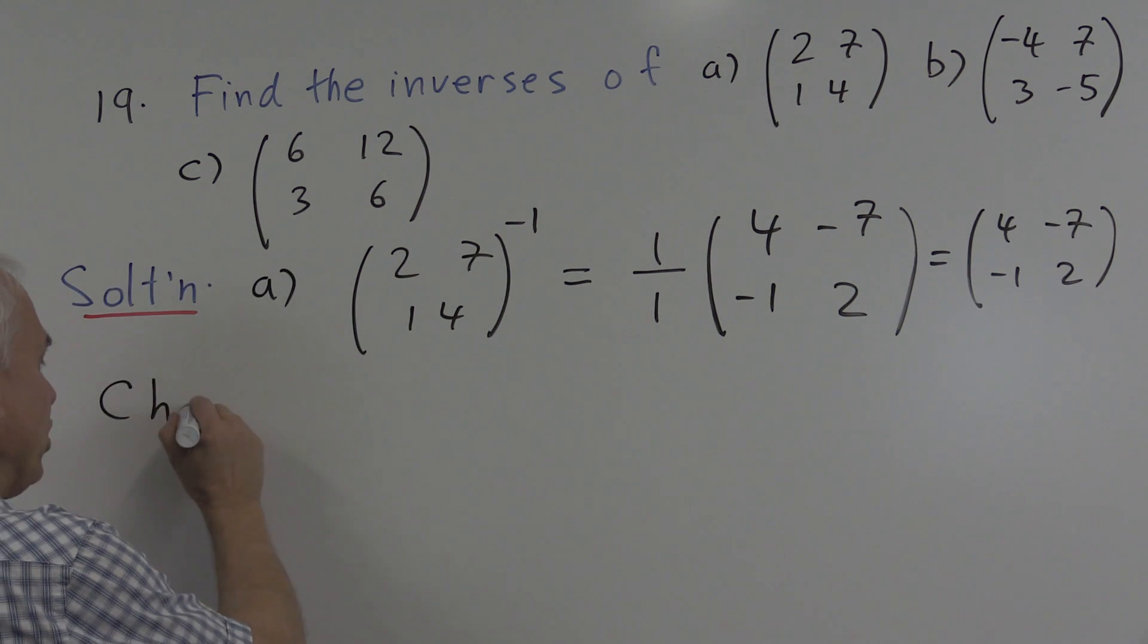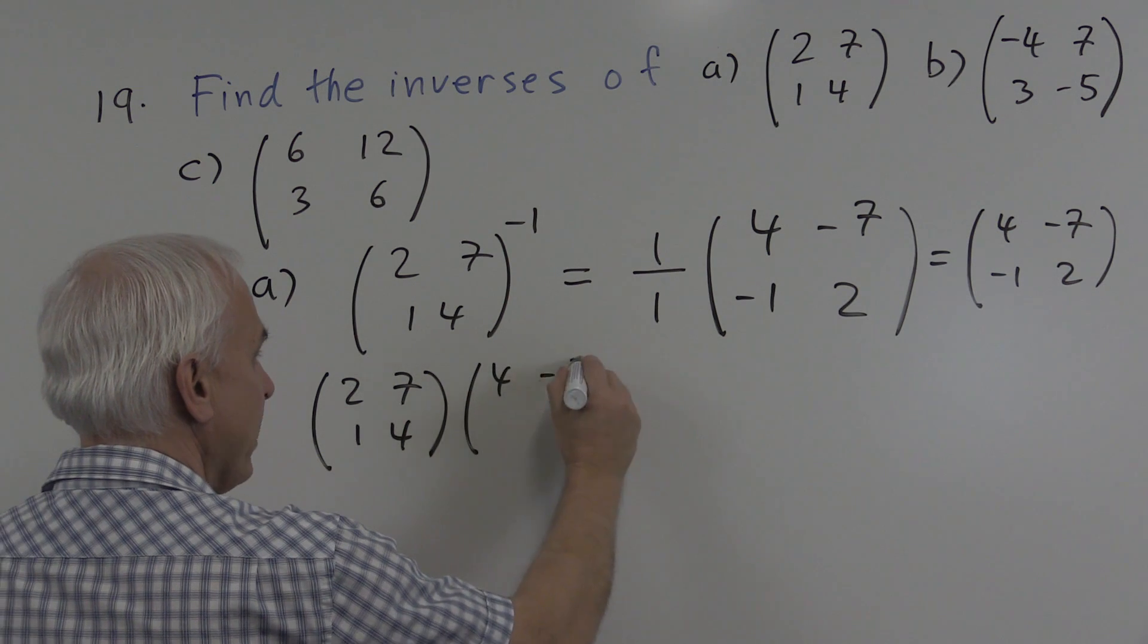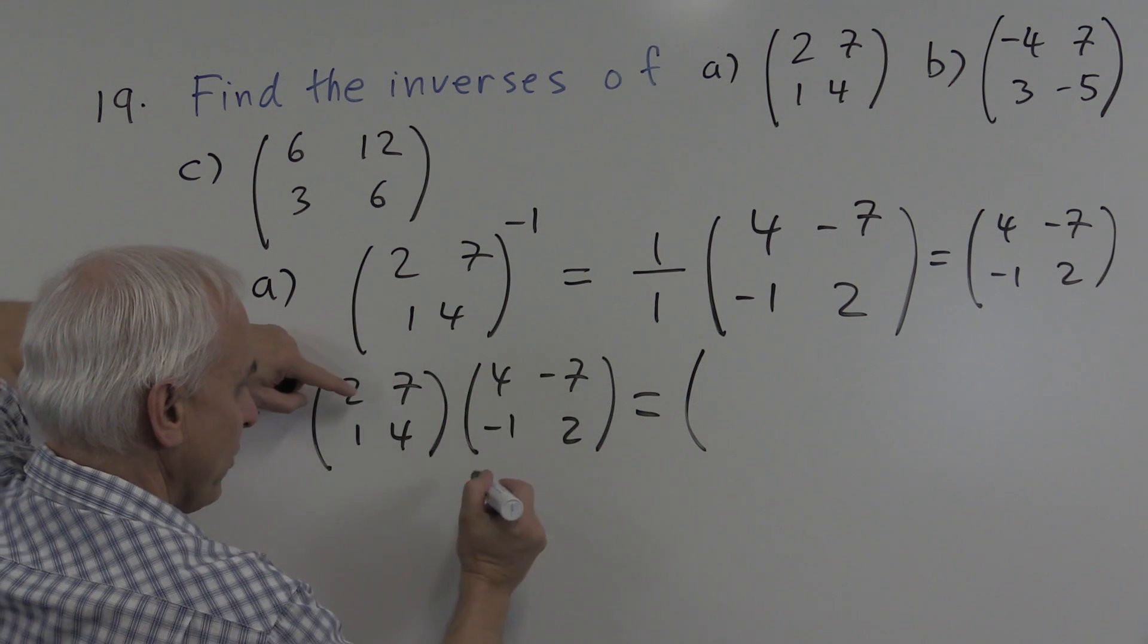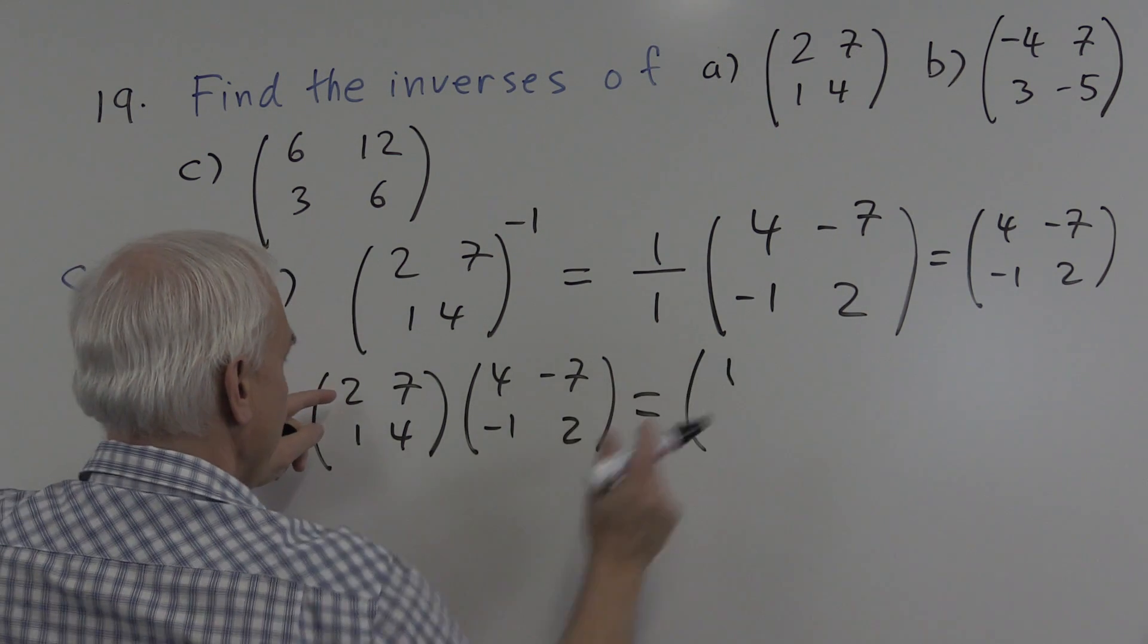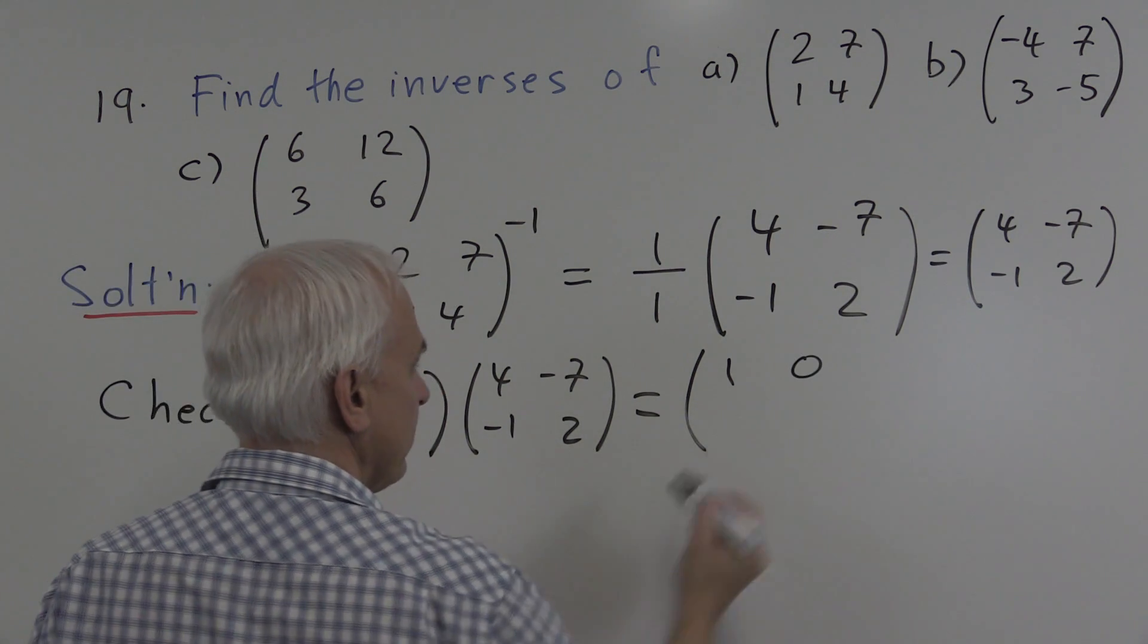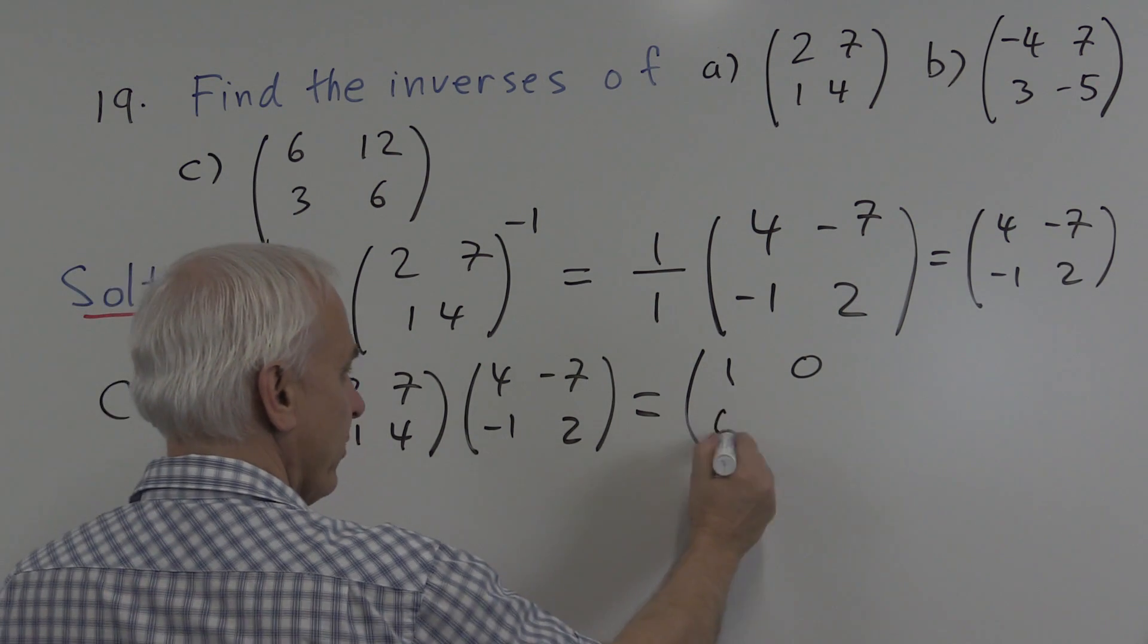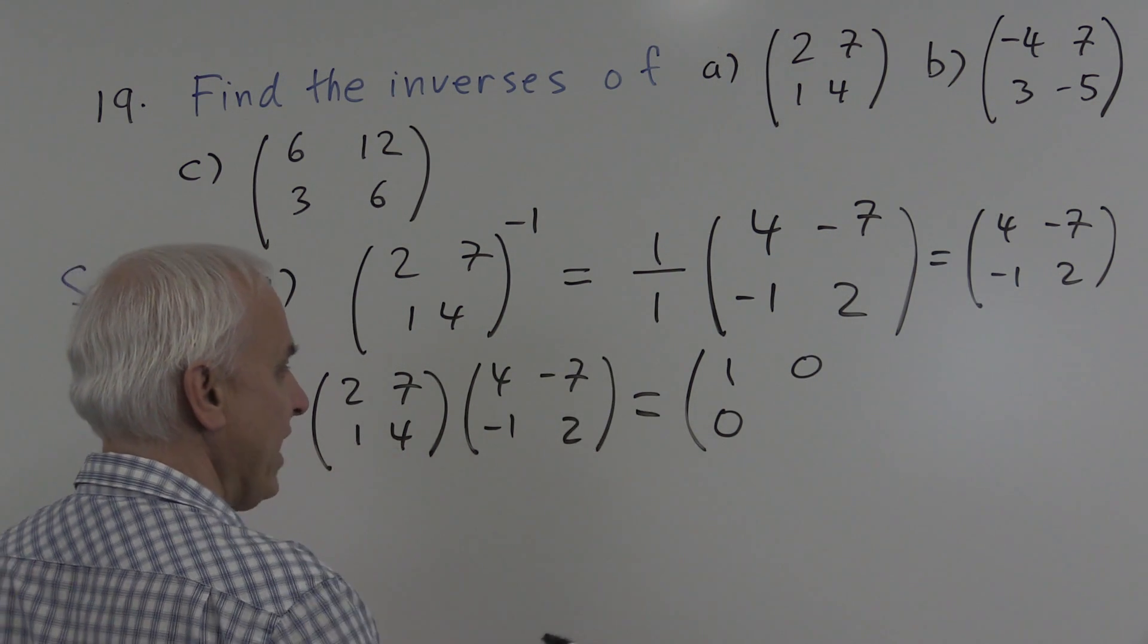Although it's not necessary, let's actually check just to make sure that we understand what's going on. So here's the original matrix two, seven, one, four. And here's the matrix four minus seven minus one, two. Let's actually see that the product actually is what it's supposed to be. So how do we multiply these matrices? First row times first column, two times four plus seven times minus one, that's one. Now over here, first row times second column, two times minus seven plus seven times two, that's zero. Over here, second row times first column, one times four plus four times minus one, four minus four is zero. And finally down here, one times minus seven, plus four times two will be minus seven plus eight is one.